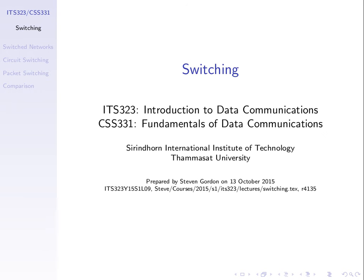We've covered a lot of details of how to get data across a link. The last topic on networking and protocol architectures introduced some concepts and ways to design networks, including what is a protocol architecture. We mentioned the TCP/IP five-layer protocol architecture: physical layer, data link layer, network, transport, and application. Now we'll start looking at the technologies, especially regarding the network layer, and then transport and application. Hopefully by the end of the semester that five-layer TCP/IP model will be much clearer.